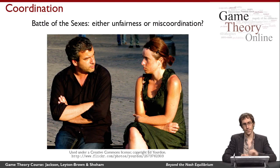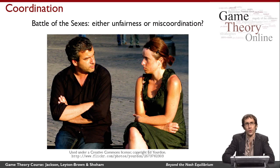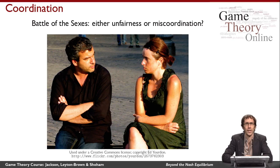Finally, I want to revisit the battle of the sexes and ask: is it really the case that, as we saw before with the Nash equilibria of this game, we're doomed either to an unfair outcome where one member of the couple always gets their preferred activity, or a miscoordination where the two members end up doing different activities? It doesn't seem like a good model of how people really solve disputes like this. So I want to think about a new solution concept called correlated equilibrium, in which we're able to achieve fairness without miscoordination.